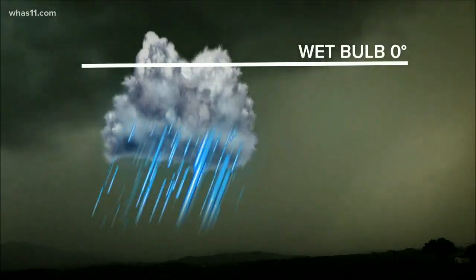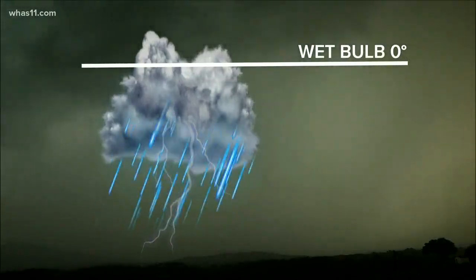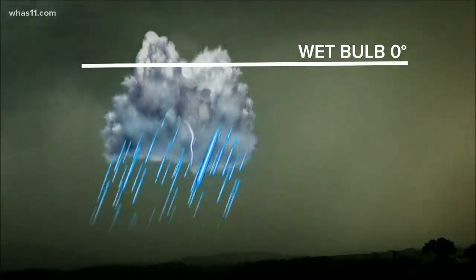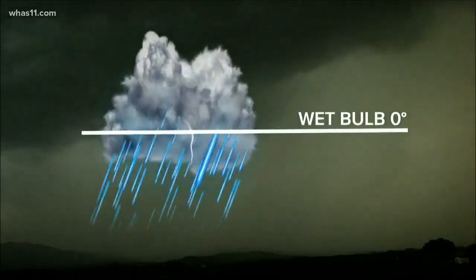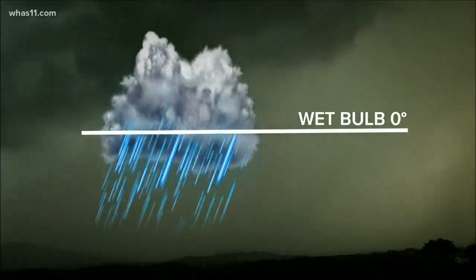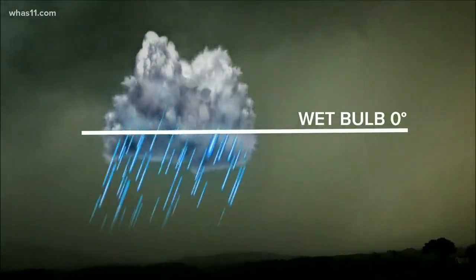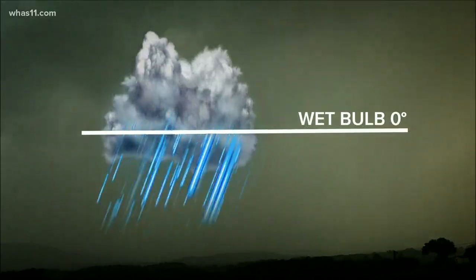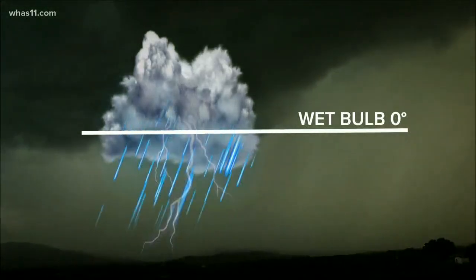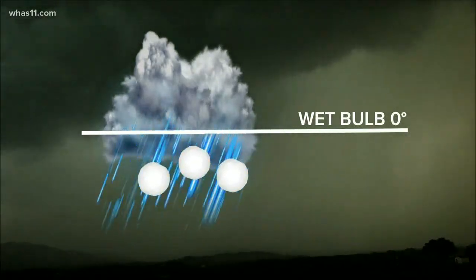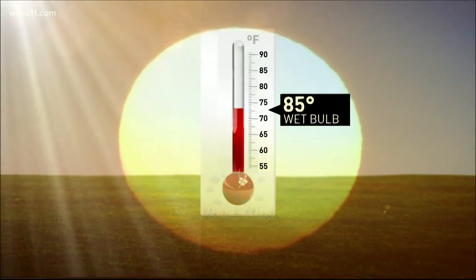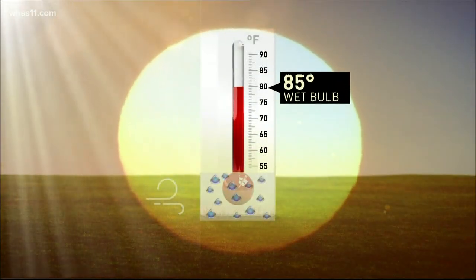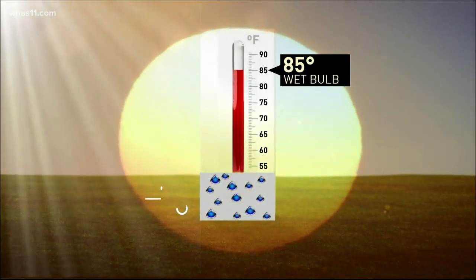We use the wet bulb temperature to find out if large hail or damaging winds could happen in thunderstorms. If the wet bulb temperature is at zero degrees at a lower height, then large hail could easily form and also possibly cause wind damage. If the wet bulb temperature is very high at the surface, that means heat and humidity is present. A high wet bulb temperature would signal a high heat index and a danger of heat-related illnesses.